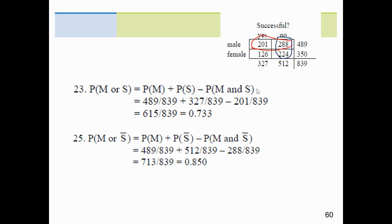So to find the probability of a male or not successful: P(male) + P(not successful) - P(male and not successful) = 489/839 + 512/839 - 288/839. Some people find it easier not to double count from the start. Hopefully this helps you out.